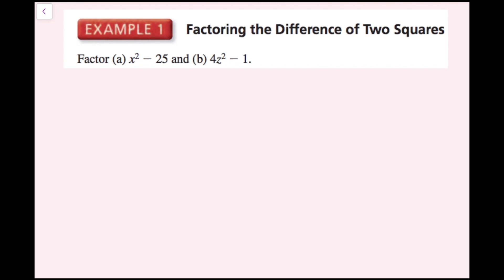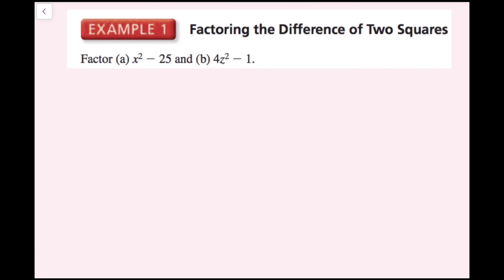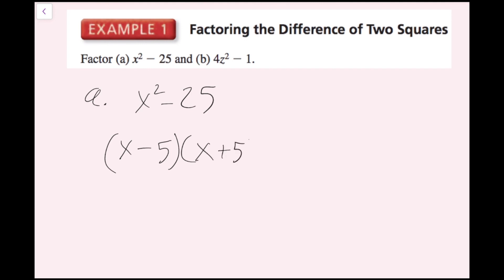For example 1, we're going to factor x squared minus 25 for part a, and 4z squared minus 1 for part b. Starting with part a: x squared minus 25. Notice this is a difference of two squares — I have x squared and I have 25. So I can rewrite this as x minus 5 times x plus 5, since the square root of 25 is 5. If you FOIL this out, you'll get x squared minus 25.